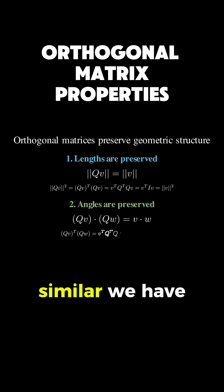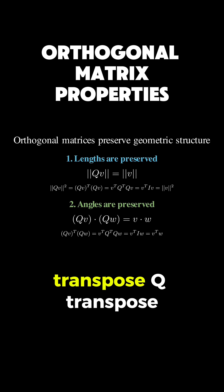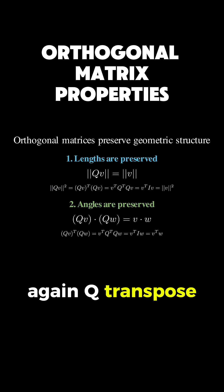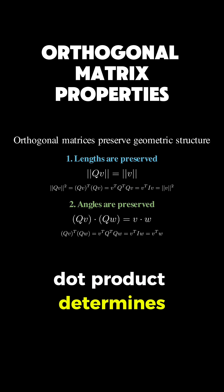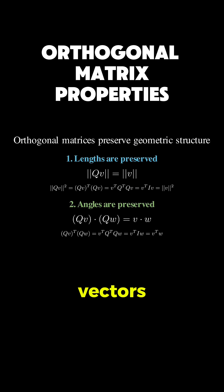The proof is similar. We have (Qv)^T(Qw), which equals v^T Q^T Qw. Again, Q^T Q is the identity, so we get v^T w, the original dot product. Since the dot product determines the angle between vectors, angles are preserved too.